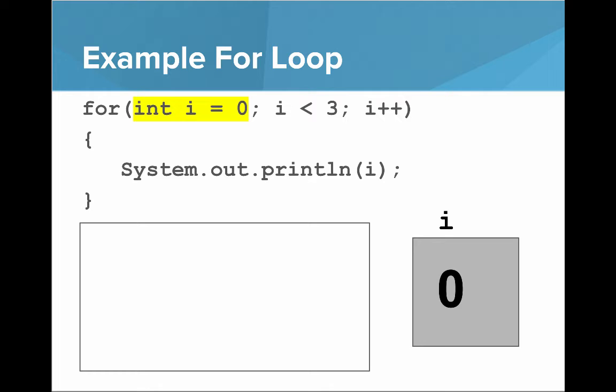So first we say int i equals 0. Well, you know what that is? That's initializing the int i to 0, we can see that in the gray box. Then we say is i less than 3, and 0 is less than 3. So then what we do is we go and execute the code in our loop. So we print line 0.